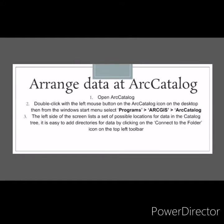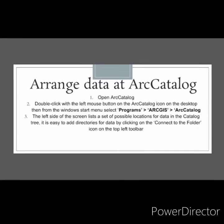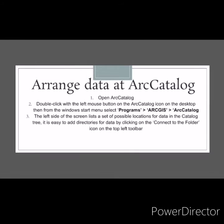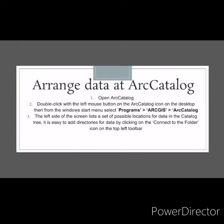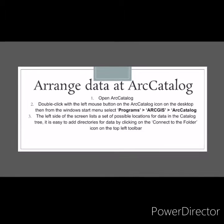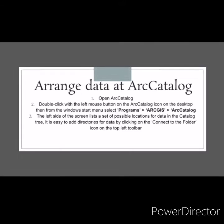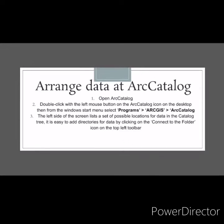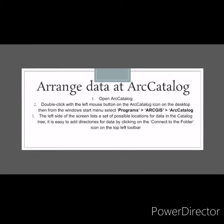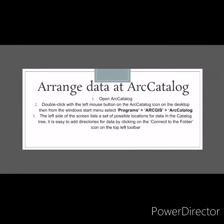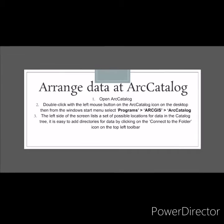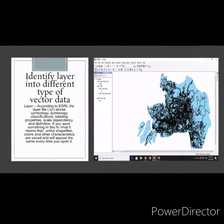All these functions are contained in ArcToolbox. To change data in ArcCatalog, first open ArcCatalog by double-clicking with the left mouse button on the ArcCatalog icon on the desktop, or from the Windows Start menu select Programs, ArcGIS, then ArcCatalog. The left side of the screen shows a catalog tree of possible data locations. You can add directories by clicking the Connect to Folder icon on the top-left toolbar.